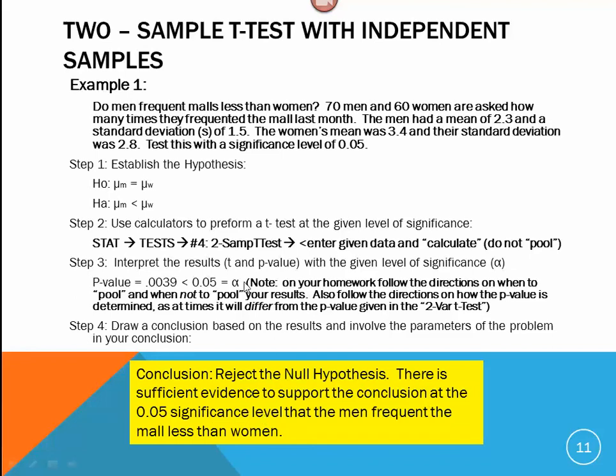Now, I do want to pull out a note here that I've indicated. And that is on your homework, as you're going through the four problems that we have here, follow the directions that are written in the homework as to when to pool and when not to pool your results. And then secondly, you want to also follow the directions on how the p-value is determined for that problem. At times, it will differ from the p-value given in the two-variable t-test. For the most part, your test statistic will always be spot on, but the p-value will sometimes be different. And sometimes what is required is that you just go to TCDF and calculate the p-value that way with, and I also give you instructions on how to do the degrees of freedom there. The problem with the degrees of freedom is we have two different sample sizes, and so the question becomes, which one do we use? And I will give you directions on that in the homework.